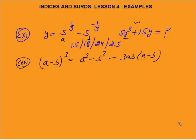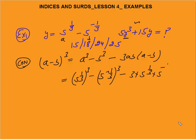So a³ would be 5^(1/3) cubed, minus 5^(-1/3) cubed, minus 3 times 5^(1/3) times 5^(-1/3) times (a - b). Now, a minus b is given as y. Very important: if you write a - b as 5^(1/3) - 5^(-1/3) again, it will make things complicated. Since we assumed a - b = y, this gives us y³.